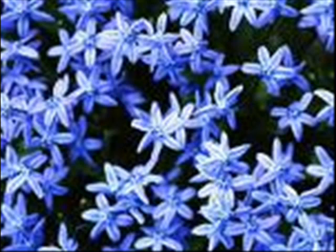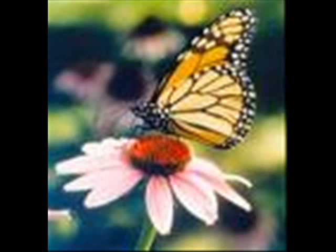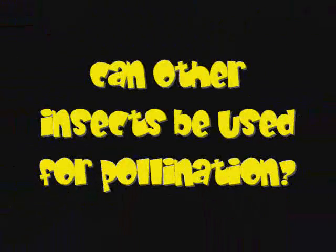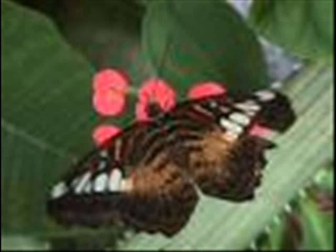The bees pollinate approximately one-third of the U.S. plant species. Many of the plants that are pollinated by bees can be pollinated by other insects, but in small holdings. Many other species are actually more efficient at pollinating, but they can't be utilized as easily as bees.